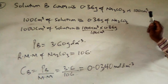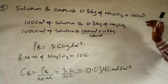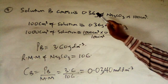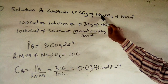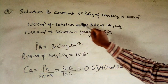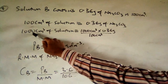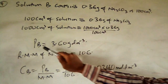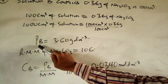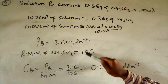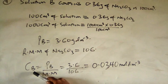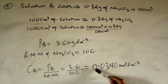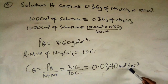Part A asks for the concentration of B in mol/dm³. Solution B contains 0.36 grams of sodium carbonate in 100 cm³. Scaling to 1000 cm³: 1000 × 0.36 / 100 = 3.60 g/dm³ (mass concentration). The molar mass of Na2CO3 is 106. CB = 3.60 / 106 = 0.0340 mol/dm³.